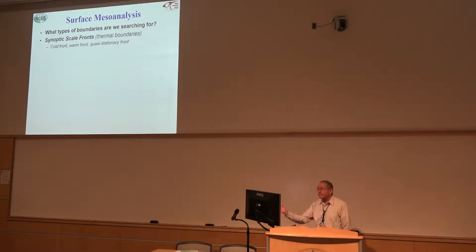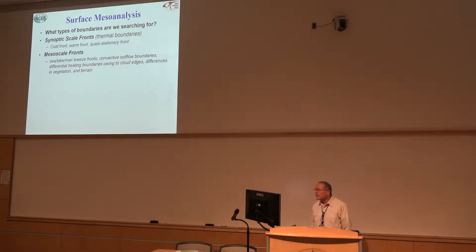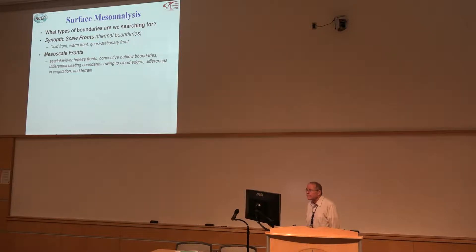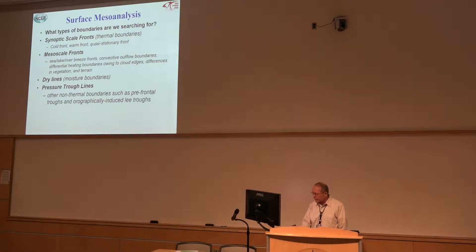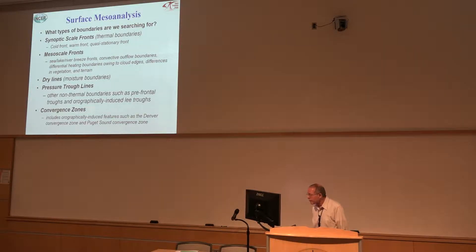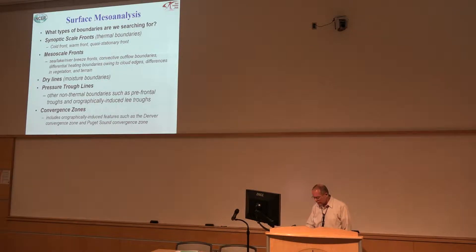What type of boundaries are we looking at? We're looking for standard fronts: cold front, warm front, quasi-stationary. We're also looking for smaller scales such as sea breeze fronts — sometimes even on lakes or rivers. Convective outflow, differential heating boundaries where there's clouds and then less clouds, differences in vegetation, dry lines, pressure troughs — they tend to not have much thermal contrast but can still be important, especially orographically induced troughs. Other convergence zones from orographic features, like the Denver Convergence Zone east of Denver, are often places where storms develop and become severe.